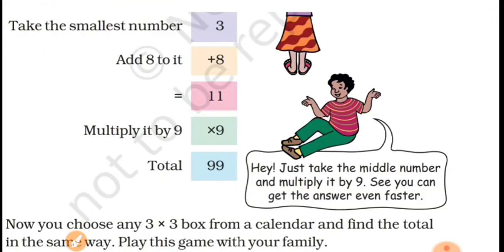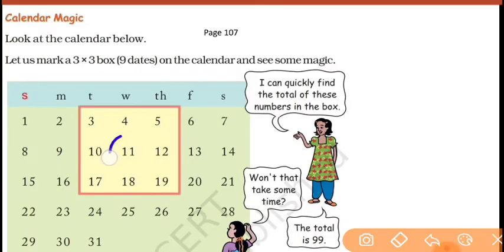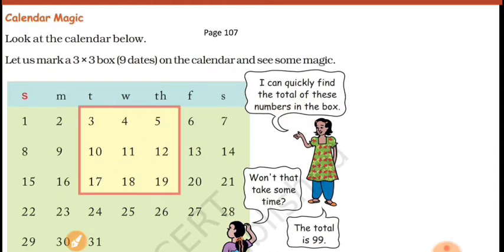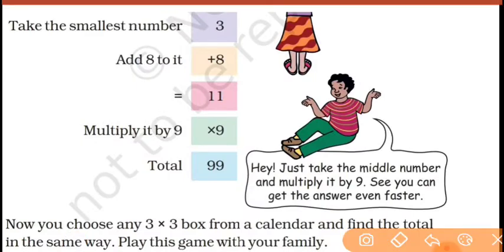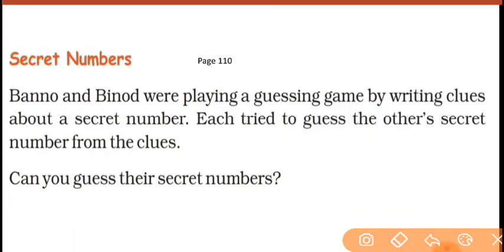Aap ise check karna. Kisi ko surprise bhi kar sakte ho — kisi ko calendar mein dikhao, poochho: is box ke 9 numbers hain, sab ko plus karke batao. Toh woh plus karne lagega, usse bahut time lagega. But aap simply beech waale number ko 9 se multiply kar doge — aur wahi answer ho jaega! Yeh bahut hi mazedaar hai. So this was the trick in Calendar Magic.